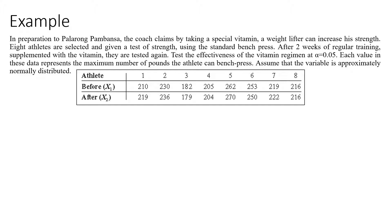Each value represents the maximum number of pounds the athlete can bench press, and the variable is approximately normally distributed. This is a dependent sample because each athlete has a before measurement and an after measurement — the same athlete provides two data points, so they are dependent with each other.